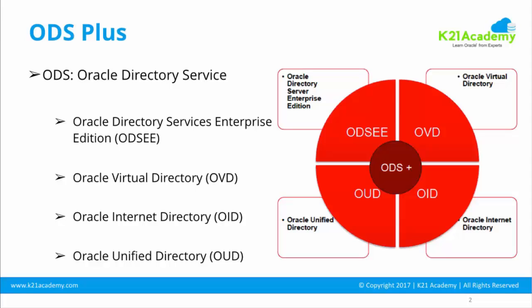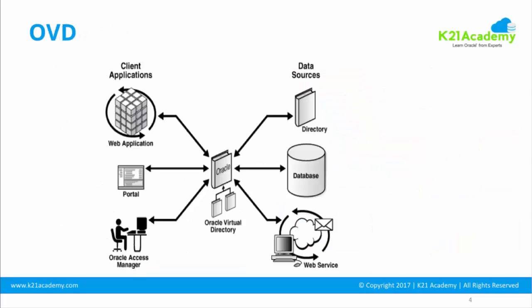Oracle also had their own directory server — Oracle Internet Directory — where data is stored in an Oracle database. In recent years, Oracle developed a brand new LDAP server completely rewritten in Java for highly scalable and performant directory service deployments. That is Oracle Unified Directory, designed for very large and scalable implementations.